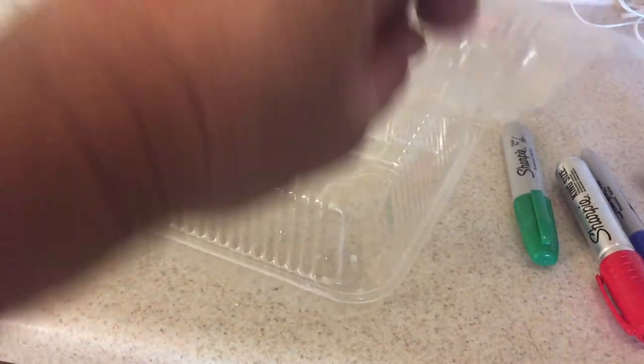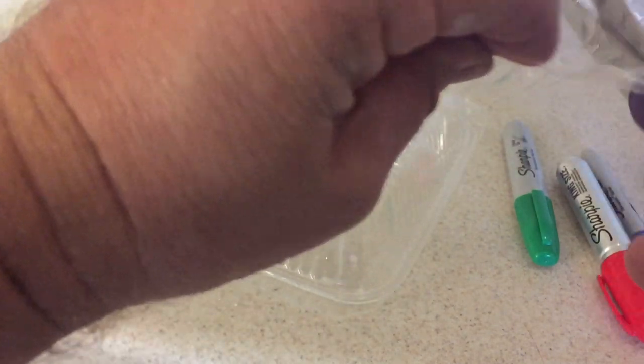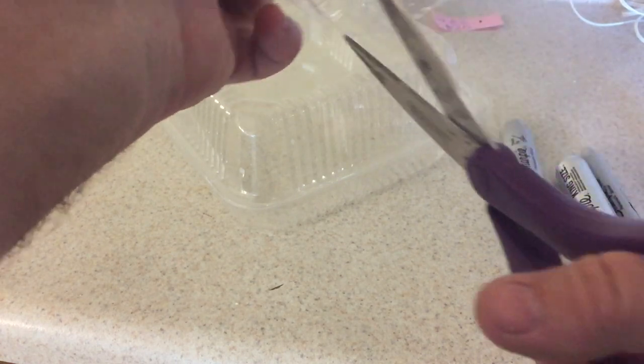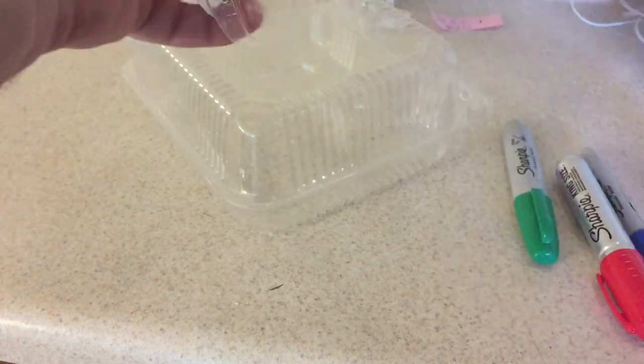Once you get that, then you're just going to cut them out, either into large squares or smaller squares. I'm just going to make three or four different squares here and cut them out.